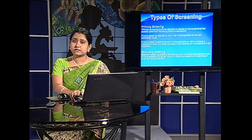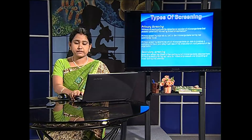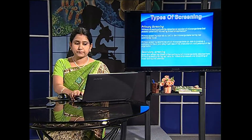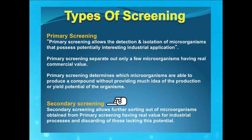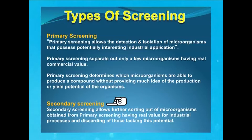Screening is of two types: primary screening and secondary screening. Primary screening is a process of isolation and detection of the microbe from any natural source having the desired trait. Secondary screening is further sorting of the microbe which has been obtained through primary screening, having a real value for industrial microbiology.